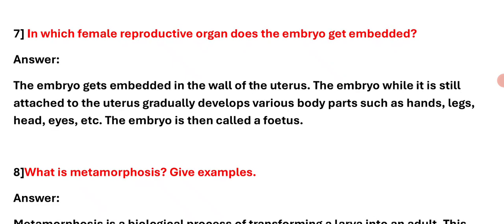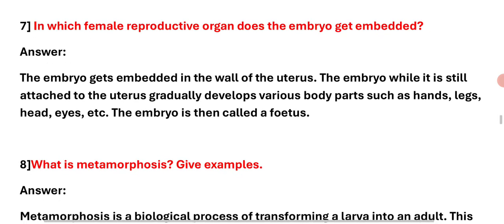Question number 7: In which female reproductive organ does the embryo get embedded? Answer: The embryo gets embedded in the wall of the uterus. The embryo, while still attached to the uterus, gradually develops various body parts such as hands, legs, head, eyes, etc. The embryo is then called a fetus.